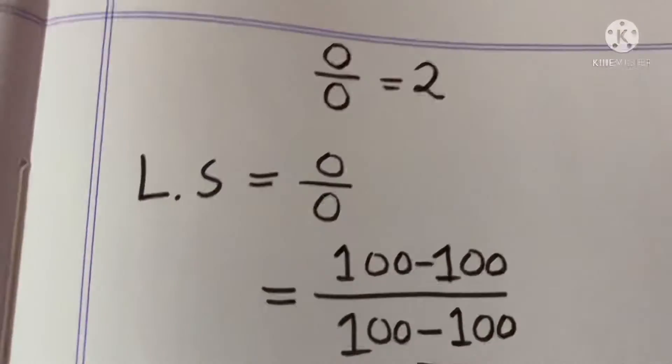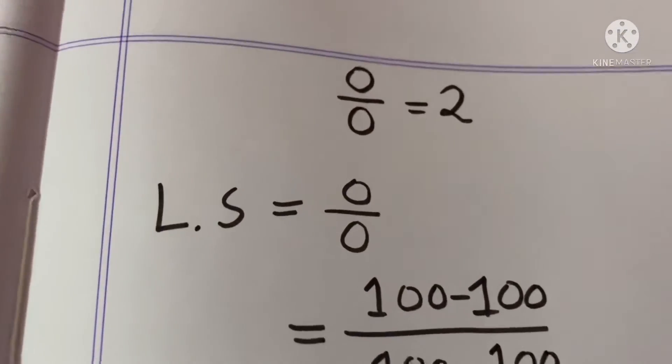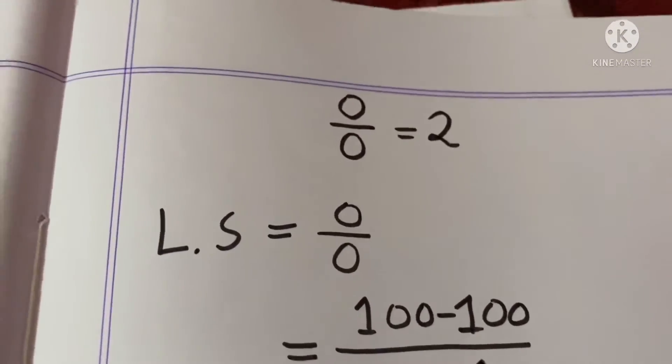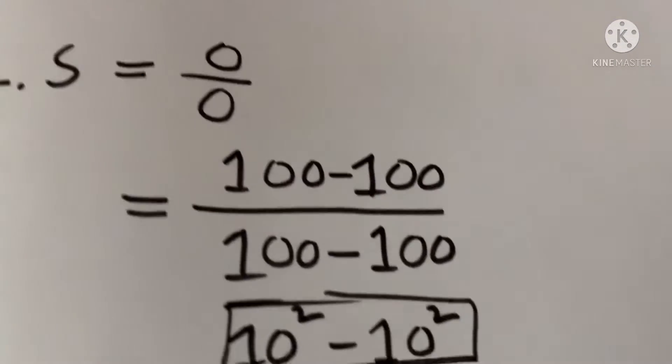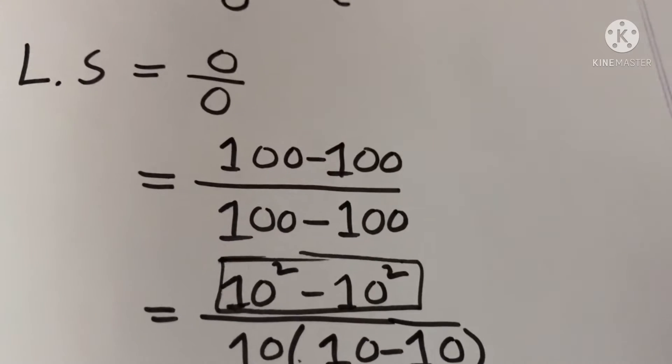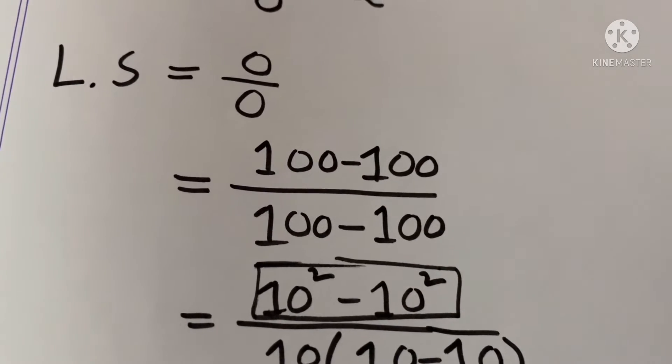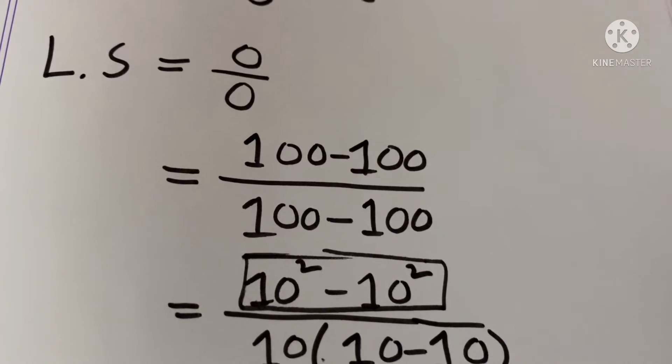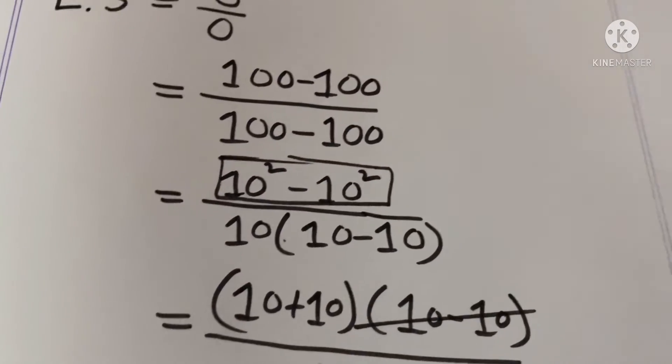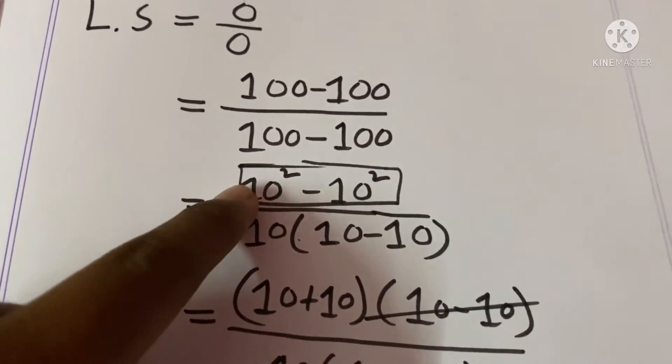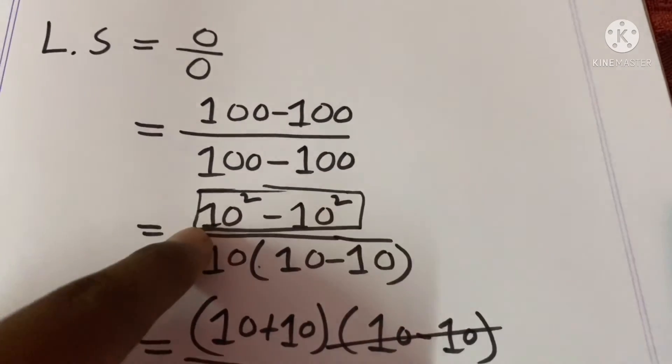See, we have to prove this: 0 divided by 0 equals 2. We just take left hand side 0 divided by 0, then we write 100 minus 100 divided by 100 minus 100, then we put 10 square minus 10 square.